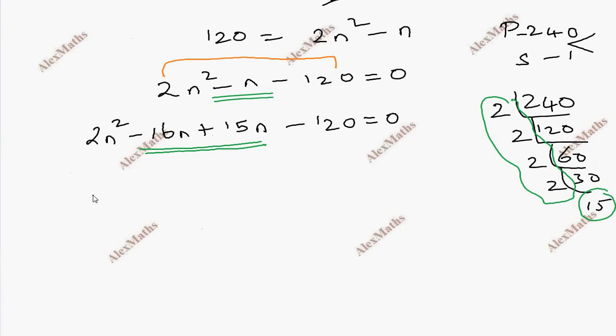First term, 2n common is n minus 8. Second term, 15 common is n minus 8 equals 0. So n minus 8 into 2n plus 15 equals 0.